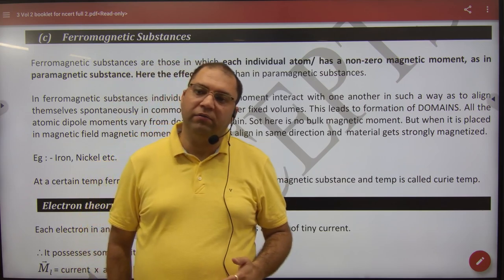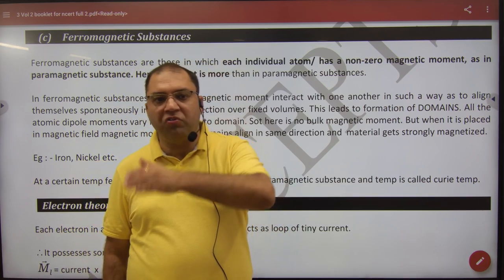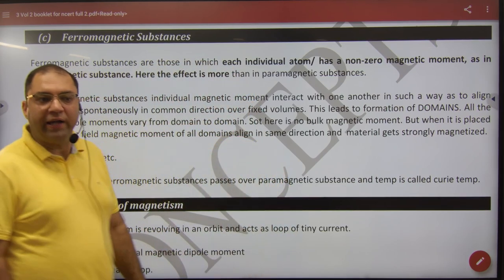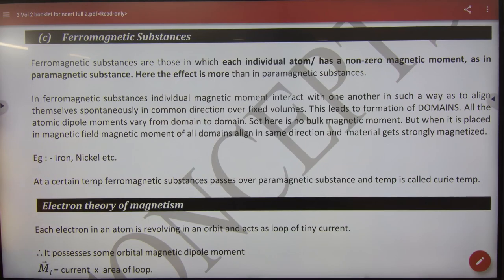So ferro is strong magnet, para is weak magnet, and dia's atom is not magnet. Its examples are iron and nickel.